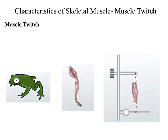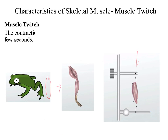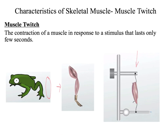Now we're going to take a look at a muscle contraction from a graphical standpoint. To do this, we have to skin the leg of a frog, isolate the gastrocnemius or calf muscle, and attach that gastrocnemius to an electrical impulse. When we run an electrical current through that gastrocnemius, what's created is a muscle twitch. A muscle twitch is the contraction of a muscle in response to a stimulus that lasts only a few seconds.